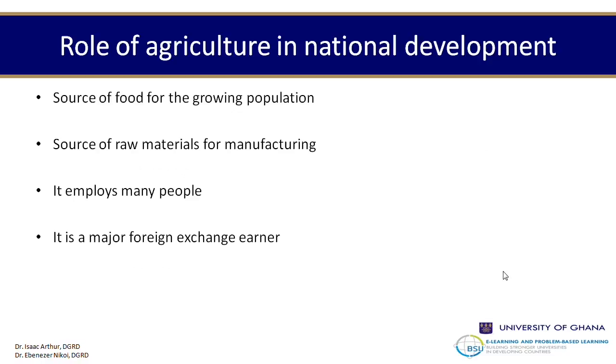Agriculture is also a source of raw material for manufacturing. Most businesses are agro-based and need resources from the farms. Take a shoe factory, for instance — the leather comes from a cattle ranch where the skin of the cattle has been removed. Another example could be an orange juice factory: an orange farm will supply oranges to the industry, which will be extracted to make the juice. So agriculture serves as a source of raw material for industry.